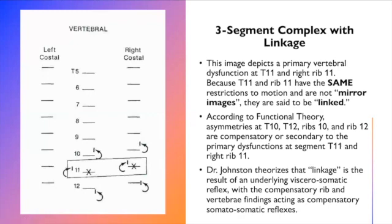According to functional theory, asymmetries at T10, T12, ribs 10 and rib 12 are compensatory and secondary to the primary dysfunctions at segment T11 and rib 11. Dr. Johnston further theorizes that linkage is the result of an underlying visceral somatic reflex with the compensatory rib and vertebral findings acting as compensatory somatosomatic reflexes. It gets quite complicated, his theories.